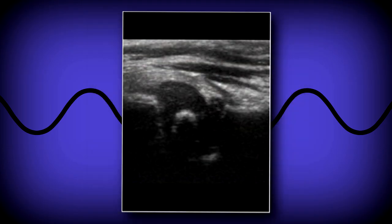When scanning older babies, you will often see an echogenic structure in the center of the femoral head. This is a normal structure — it's just the ossification center. As the baby gets older, the cartilaginous portion of the femoral head ossifies more and more.